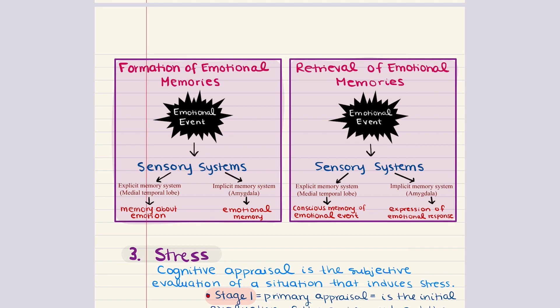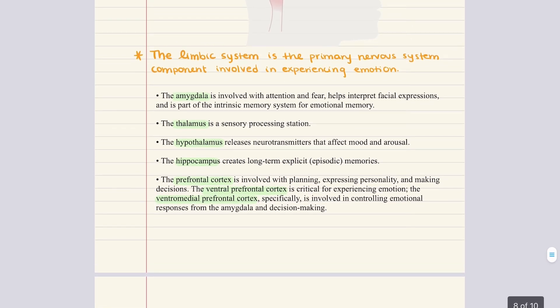When an emotion is experienced, sensory systems transmit information into both the explicit memory system — primarily controlled by the hippocampus in the medial temporal lobe — and the implicit memory system controlled by the amygdala. Both systems are used for the formation and retrieval of emotional memories. Conscious or explicit memory is the memory of experiencing the actual emotion, like remembering you were happy at your high school graduation. Unconscious or implicit memory, referred to as emotional memory, is the storage of the actual feelings associated with an event. The ability to distinguish and interpret others' facial expressions is primarily controlled by the temporal lobe, with some input from the occipital lobe. This function is lateralized — the right hemisphere is more active when discerning facial expressions — and women demonstrate more activation of these brain areas than men.